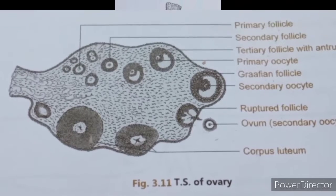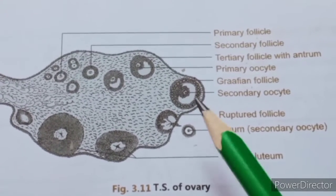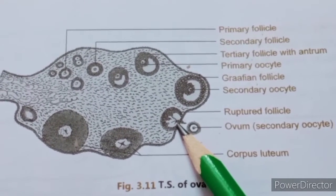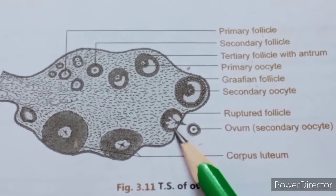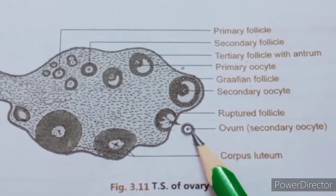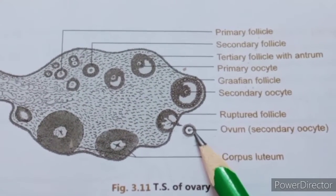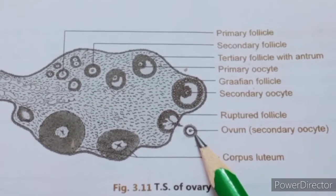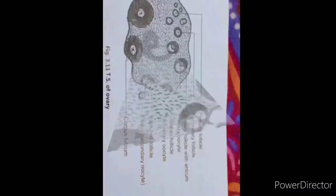After the maturity of the Graafian follicles, the ovum is released from the Graafian follicle. The process of releasing the ovum from the ovary is termed ovulation. This ovum is then collected by the fallopian tube.